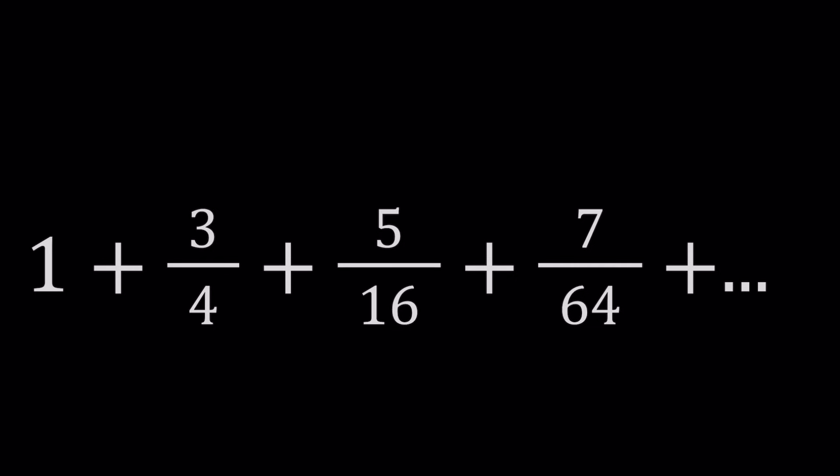This is what we have: 1 plus 3 fourths plus 5 over 16 plus 7 over 64. If you want to know the pattern, it's basically the odd numbers in the numerator and powers of 4 in the denominator, starting with 4 to the power 0.